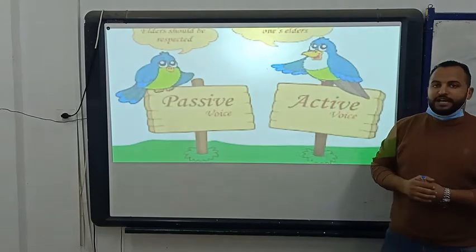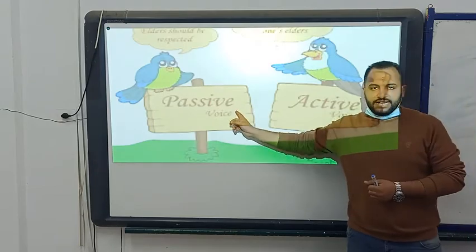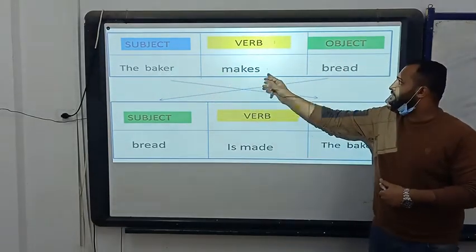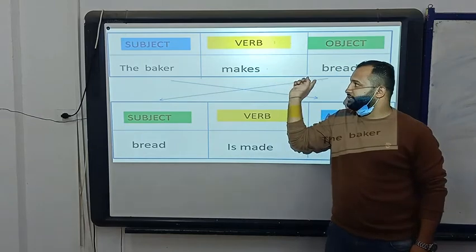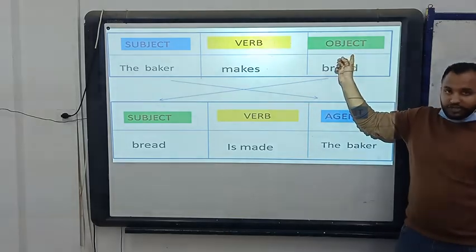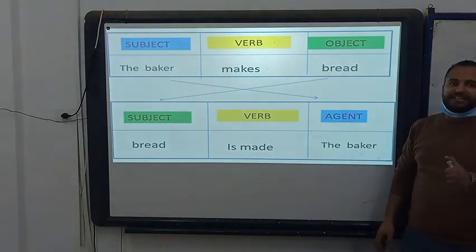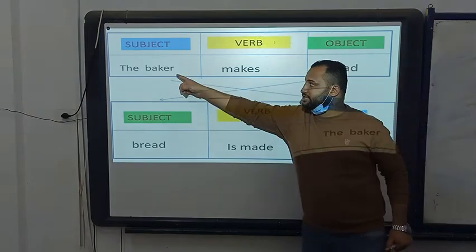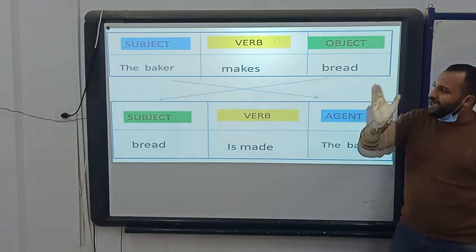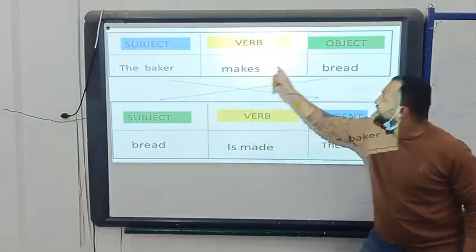Now we have finished our new vocabulary. Let's move on to the grammar of the unit with the title: Active and Passive. Look at this sentence: The baker makes bread. The baker is the subject, makes is the verb, bread is the object. If the sentence starts with subject plus verb, it's called an active sentence or active voice. If I want to make it passive, I start with the object.